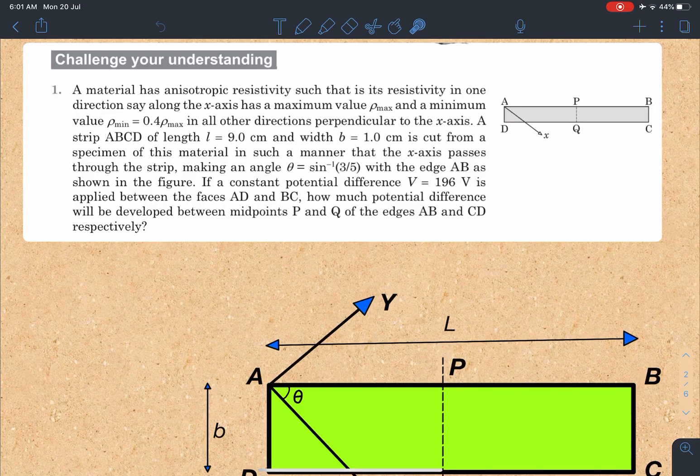There is a relation between ρ_max and ρ_min given. They are saying a strip ABCD of length 9.0 cm and width 1.0 cm is cut from a specimen of this material in such a manner that the x-axis passes through the strip making an angle θ with the edge AB as shown in the figure.